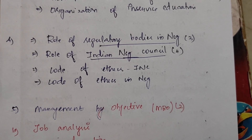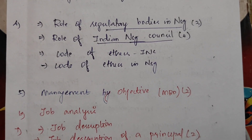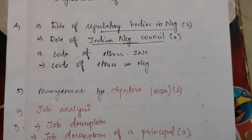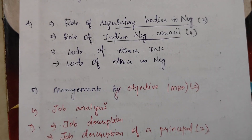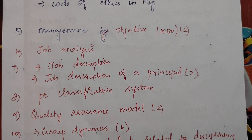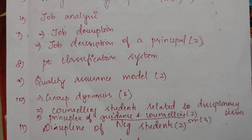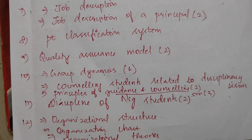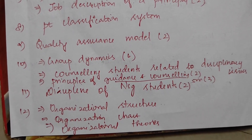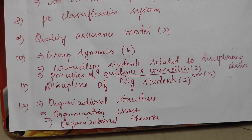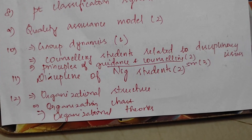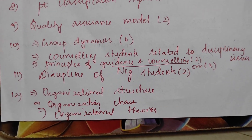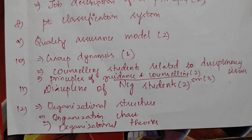Role of Indian Nursing Council. Code of Ethics in Nursing. Management by Objectives. Job Analysis. Job Description of a Principal. Patient Classification System. Quality Assurance Model. Group Dynamics. Counseling students related to disciplinary issues. Principles of guidance and counseling. Guidance and counseling. Discipline of nursing students. Organizational Structure. Organization Chart. Organizational Theories.